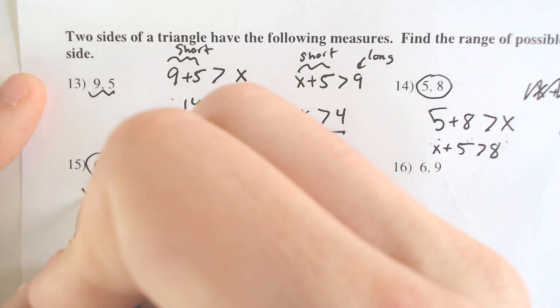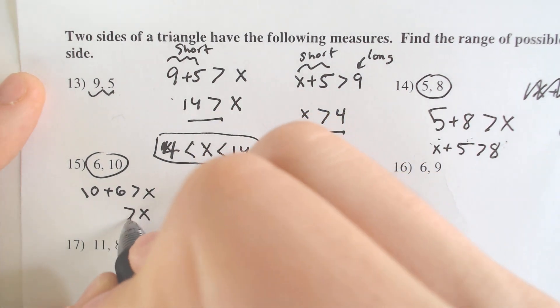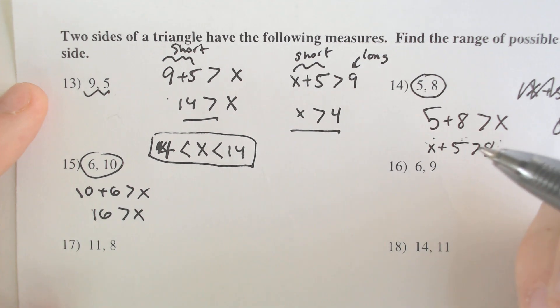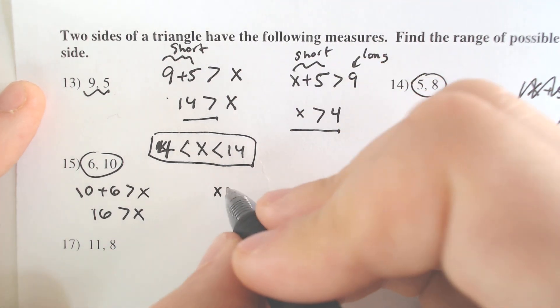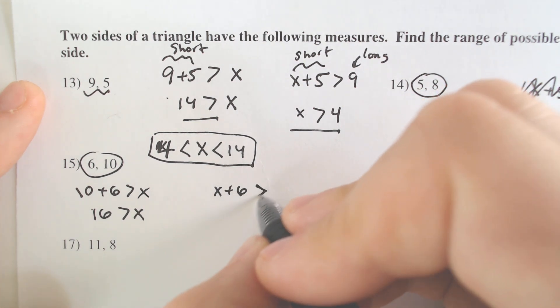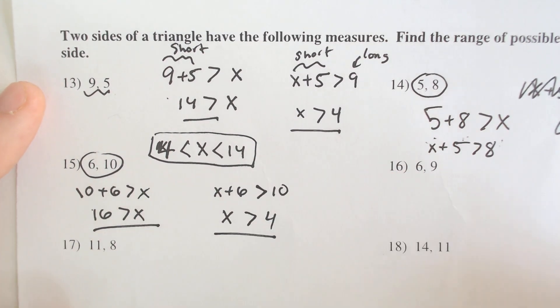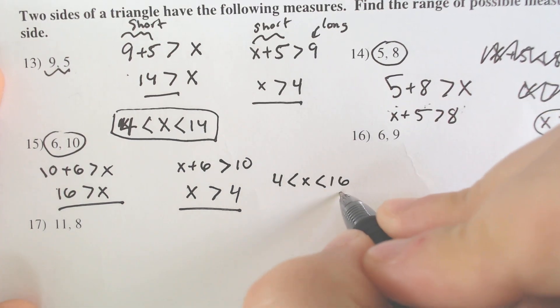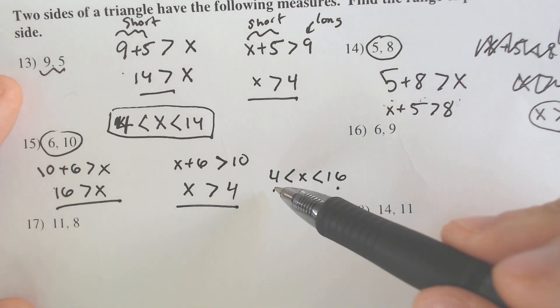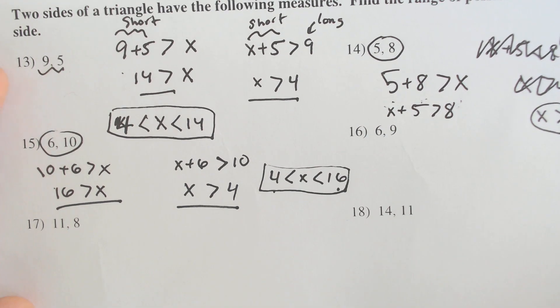Pretend these two are the shorter sides. That means that 10 and 6 has to be greater than the third side, which means the third side has to be physically smaller than 16. Pretend that 10 is the biggest side. If 10 was the biggest side, then X and the shorter side would have to be bigger than 10 as well. So X also has to be greater than 4. So it has to be greater than 4, but less than 16. Smaller number and bigger number in their appropriate places. Smaller number on the left, bigger number on the right. Less than symbols in between. And we get our answer.